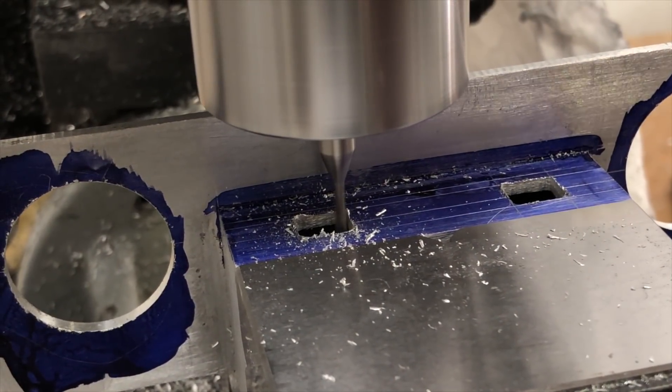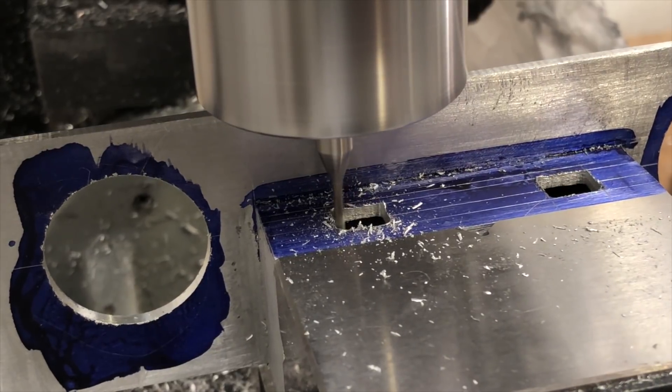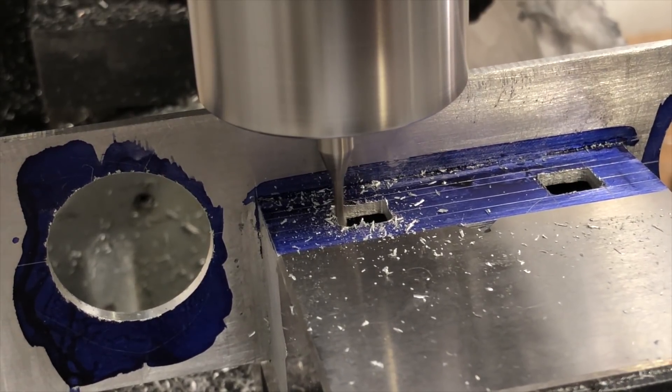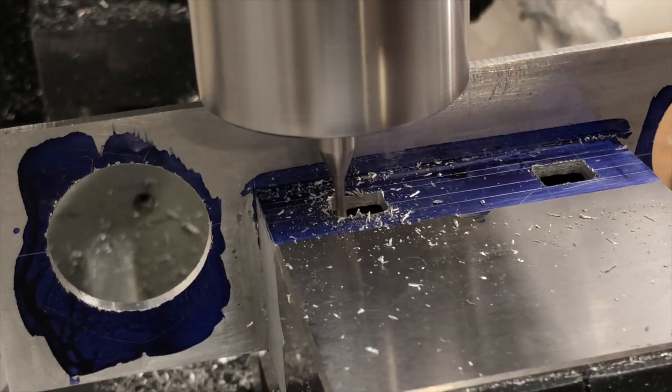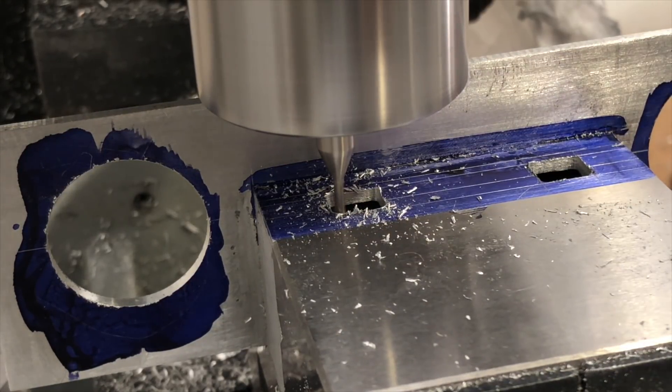Next, I'm going to cut the two windows in the front that are for the rangefinder. These are cut using tiny little 3mm 2 flute end mills. I use these little guys quite often, but they break so frequently that I order them by the dozen. Luckily, I didn't break any today.